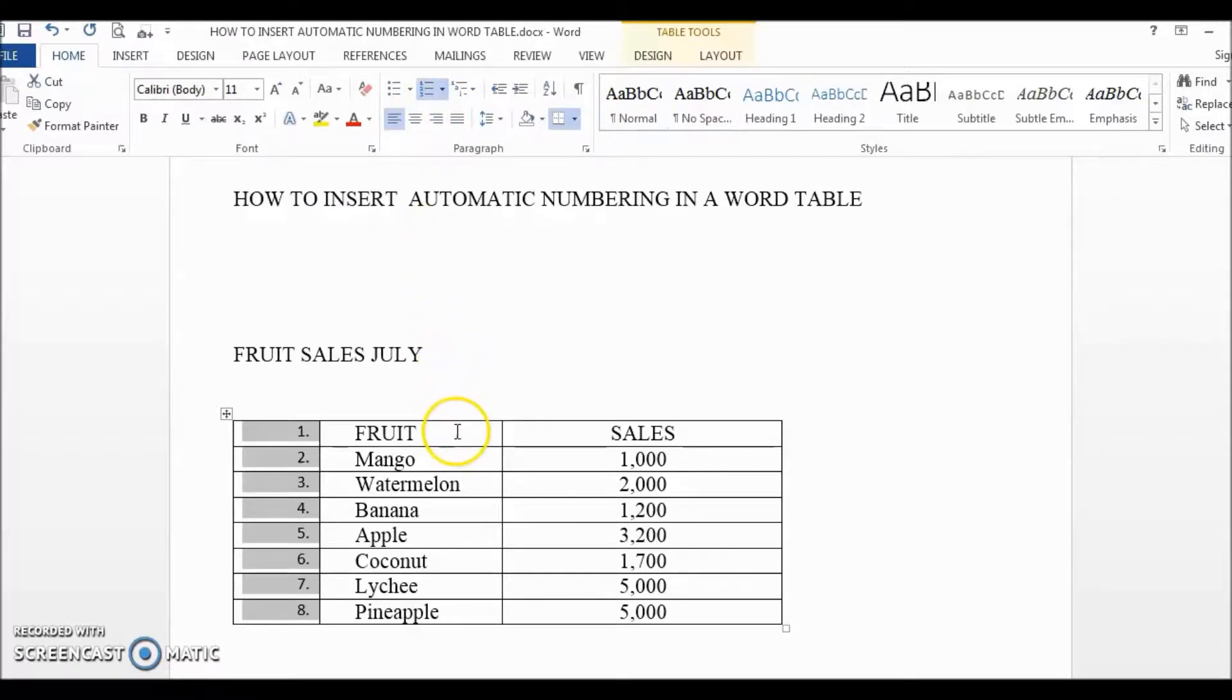But now we have a problem. The first row is supposed to be the header row, so technically the first cell of the first row should not be numbered. No worries, we just need to go to that first cell and delete the number 1. Now our number list will start from row 2 and we have the best of both worlds.